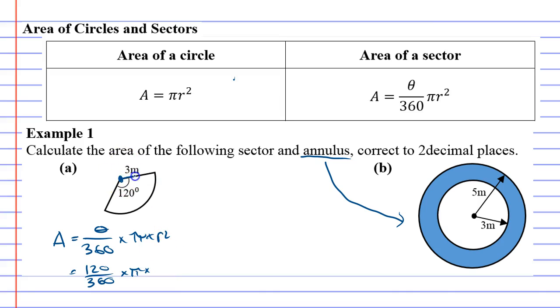That's going to be 3 squared, and we just use our calculator: 120 over 360, or divide 360, times pi times 3 squared gives us, corrected to two decimal places, 9.42 meters squared. This is area.